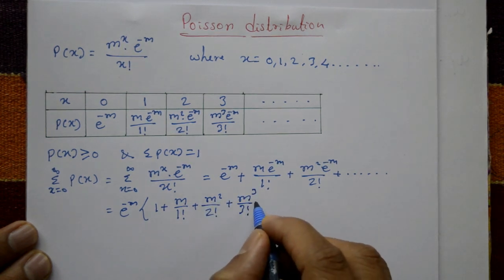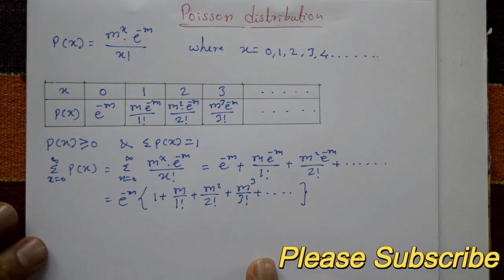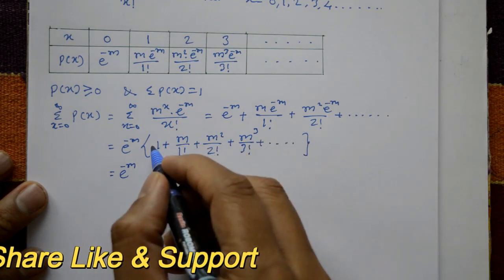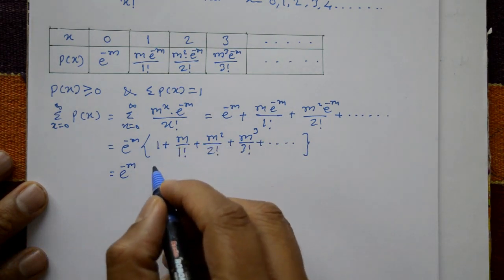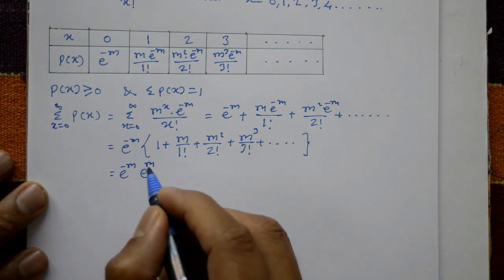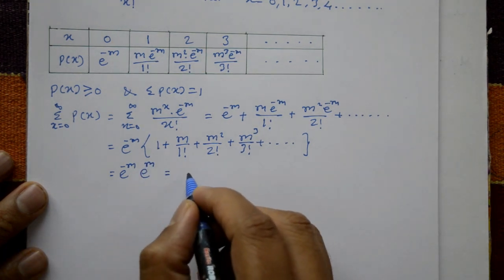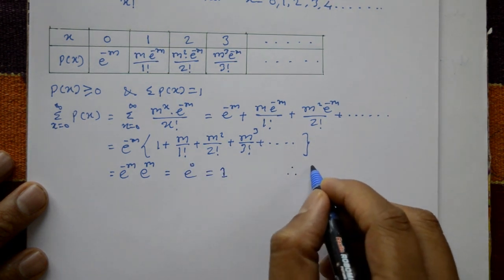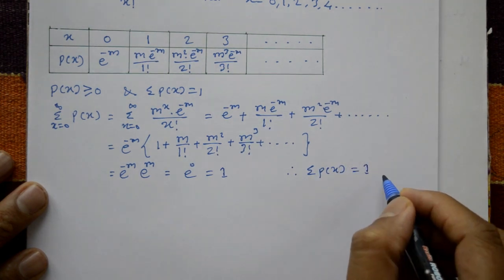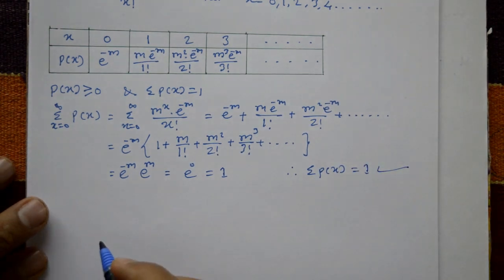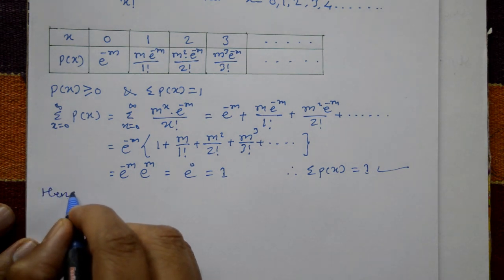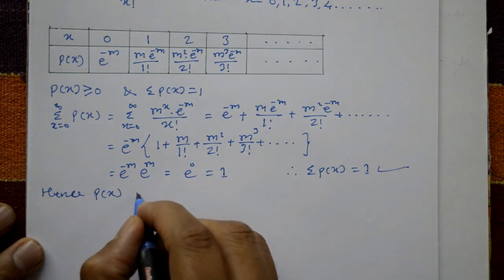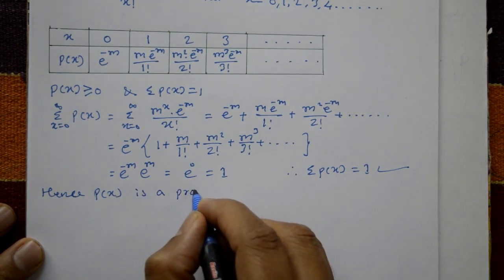The series inside the brackets is the standard expansion of e^m, so e^(-m) * e^m = e^0 = 1. Therefore, the summation of P(x) = 1. Both conditions are satisfied, hence P(x) is a valid probability function.